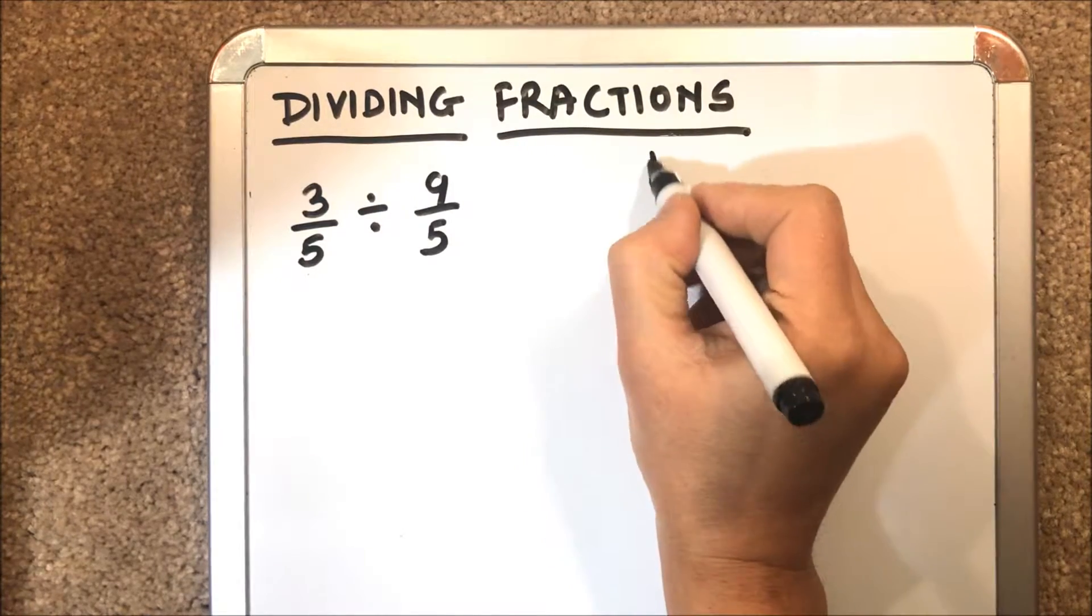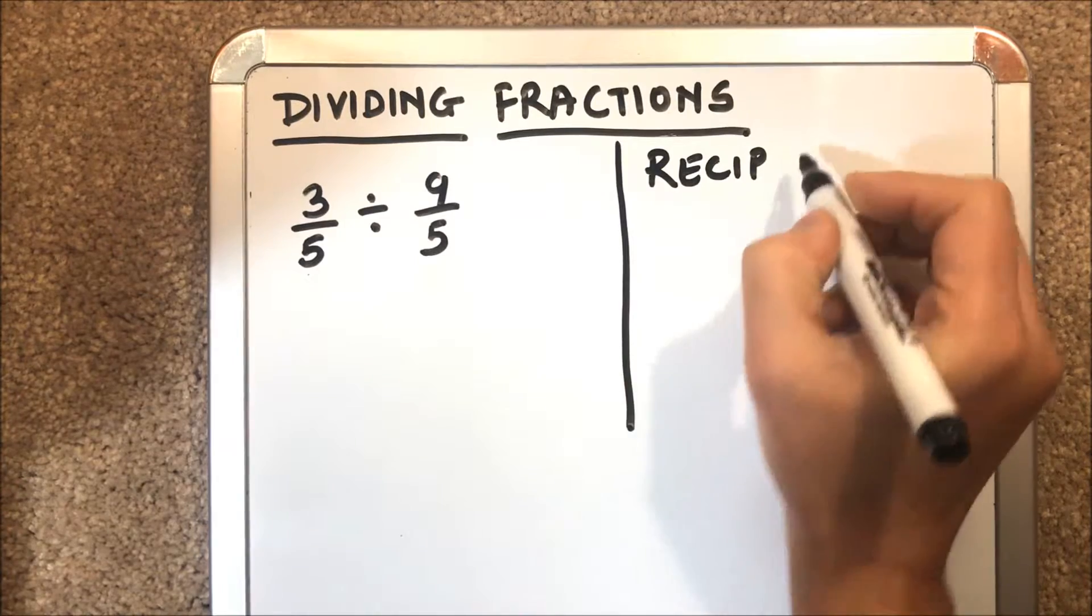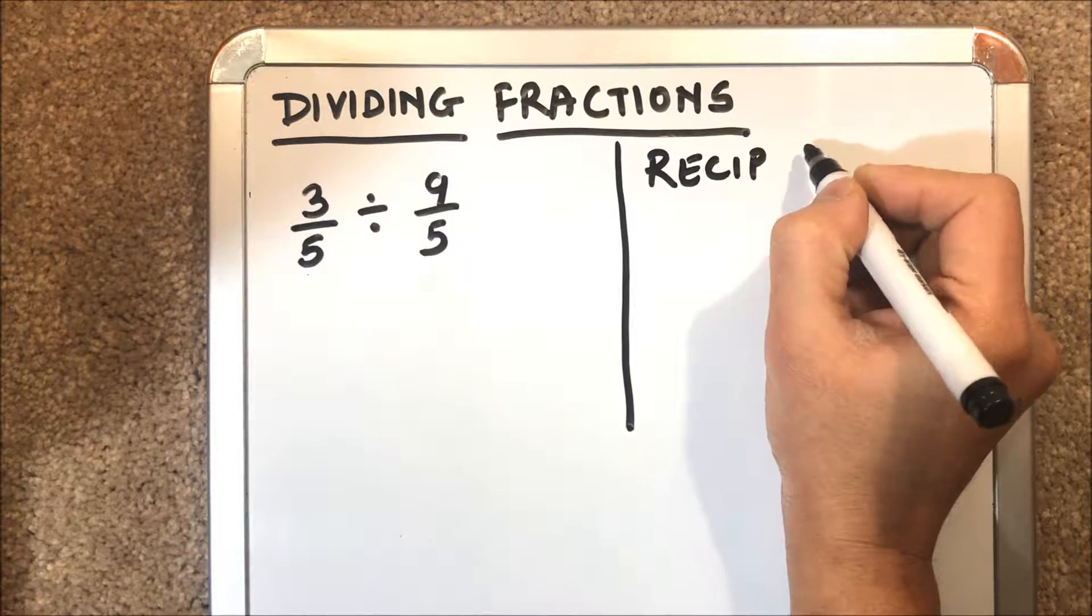What is a reciprocal? A reciprocal of a number is a number by which if the number is multiplied, we will get the product as 1.